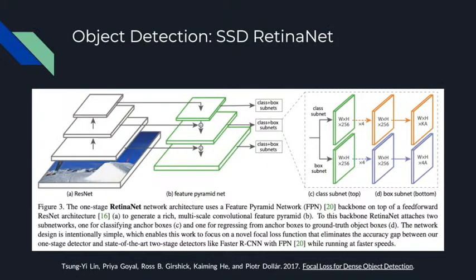The first algorithm we tried based on SSD is SSD-based RetinaNet. RetinaNet has an SSD detector with a ResNet-based feature extractor and a feature pyramid network. It combines the feature pyramid network to extract features from the original image, and the SSD architecture is used to propose bounding boxes and make classifications. The network also focuses on a novel focal loss function that eliminates the accuracy gap between one-stage detectors and state-of-the-art two-stage detectors.